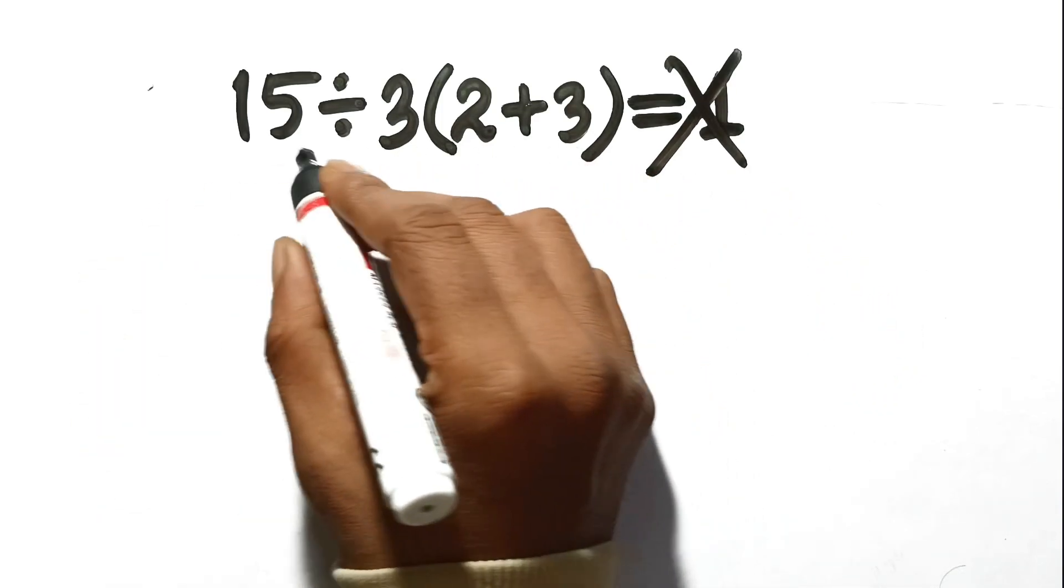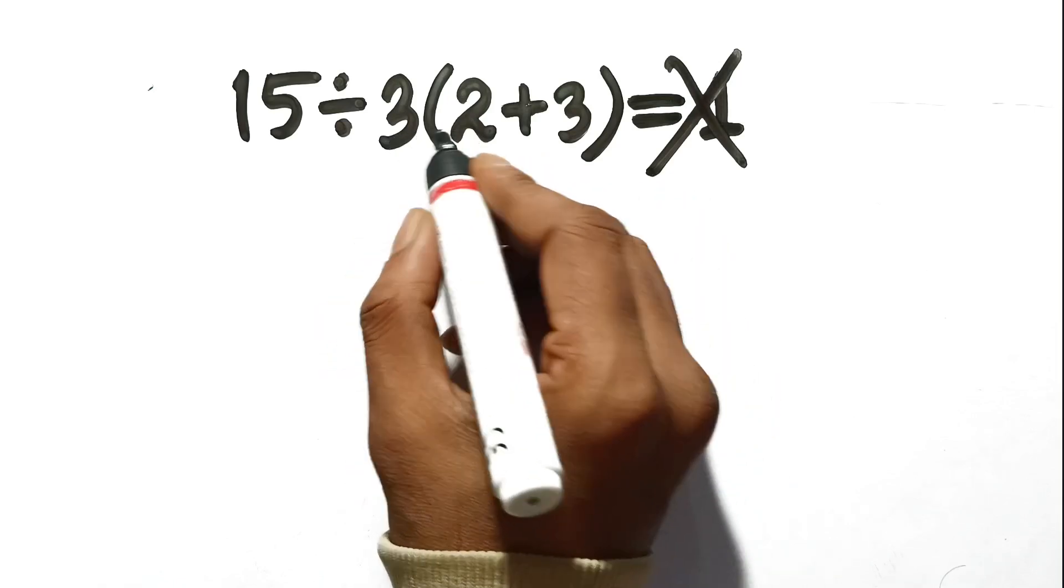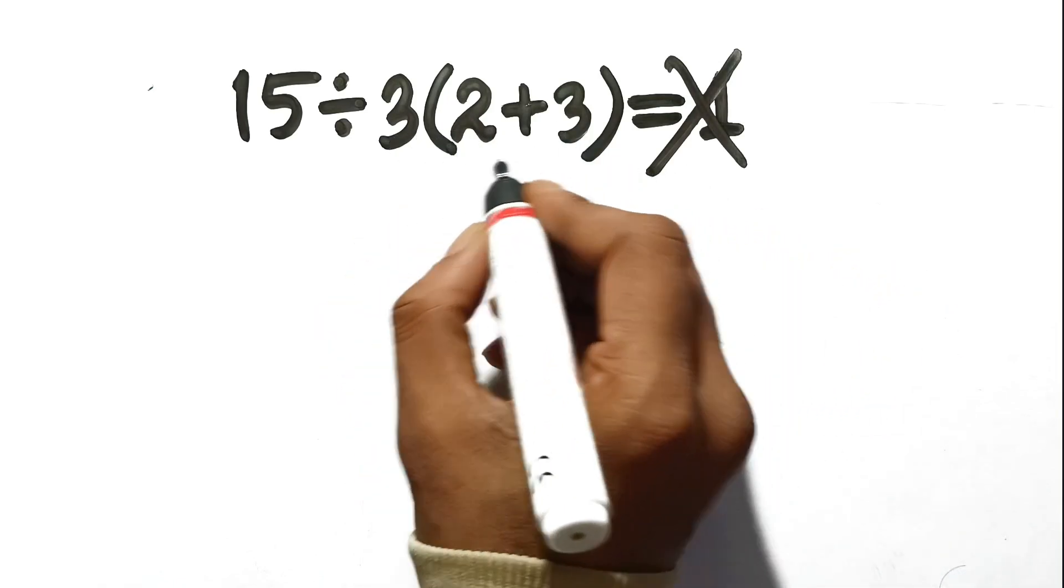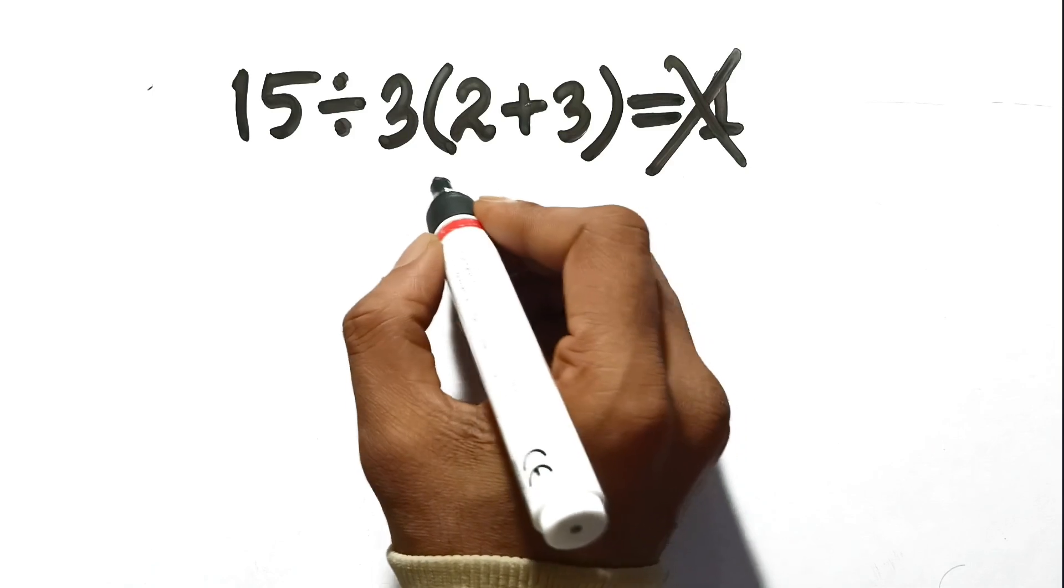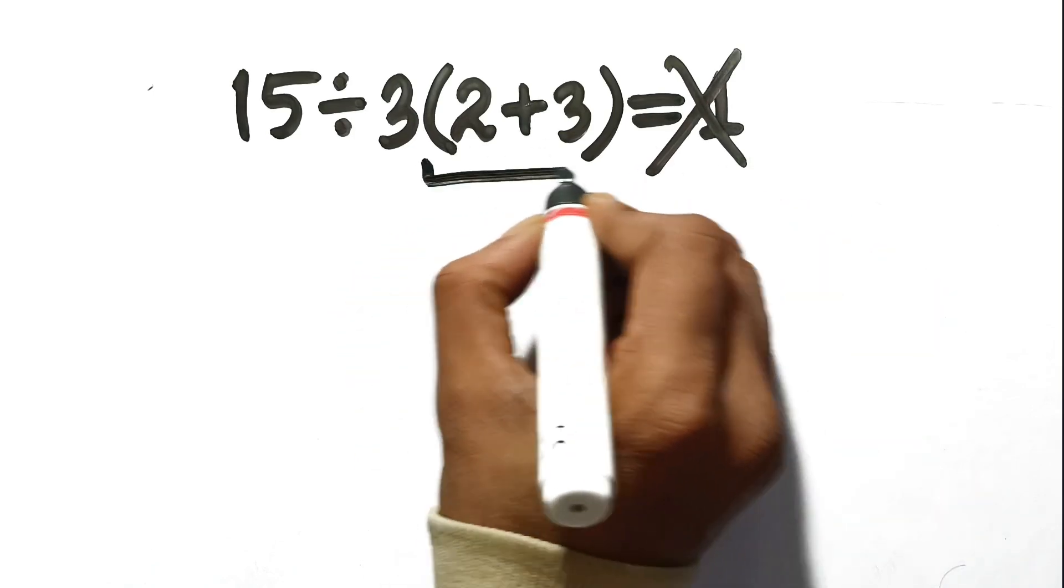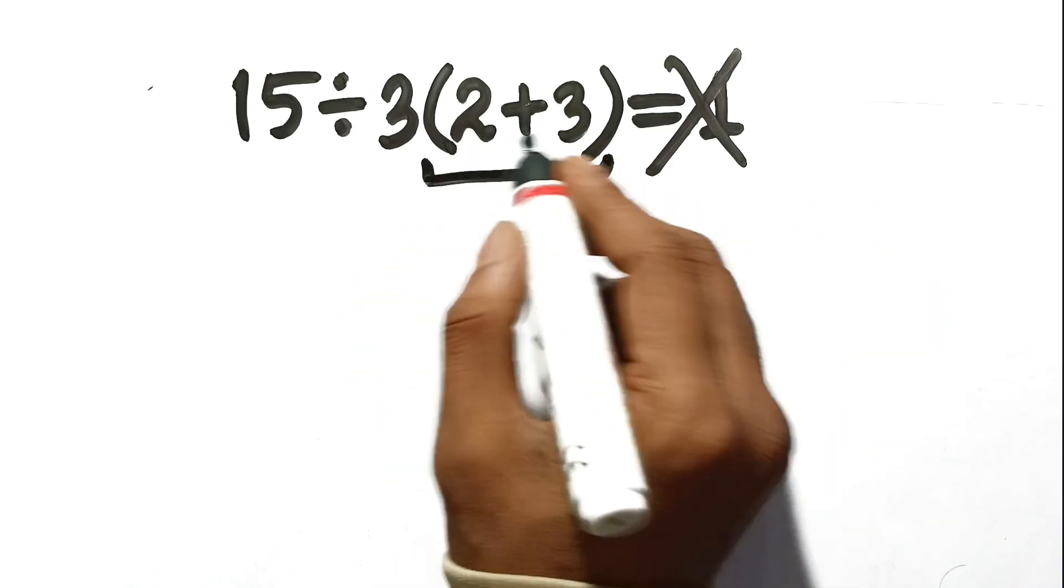When you see 15 divided by 3 parentheses 2 plus 3, your brain effectively plays a massive trick on you. You instinctively solve the inside of the parentheses first, which is correct, getting 5.